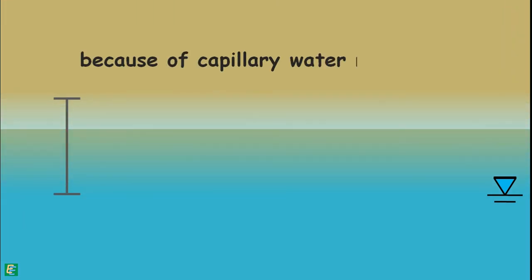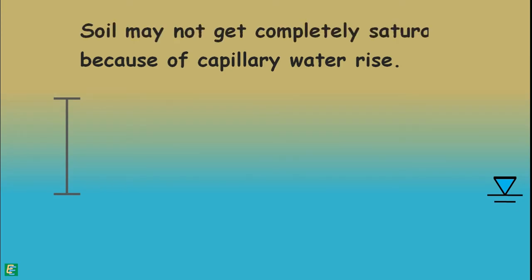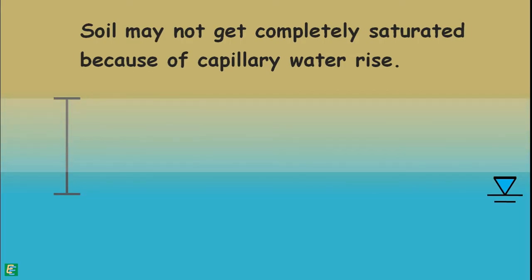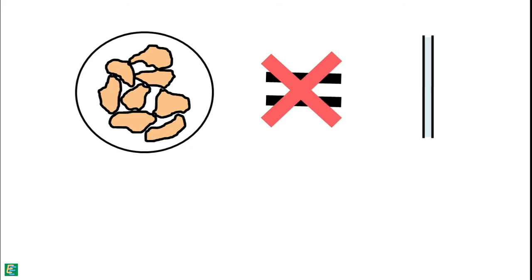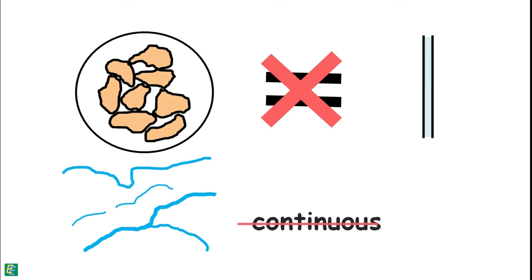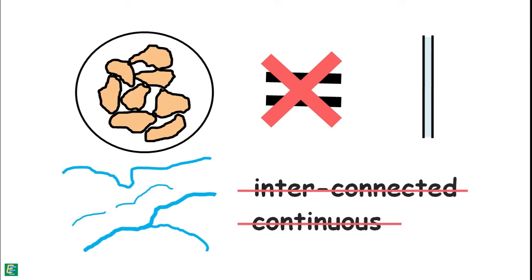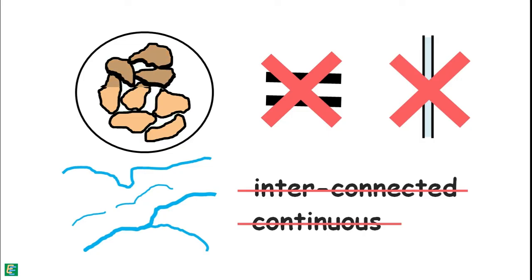We should also note that because of the rise of capillary water, soil does not necessarily get fully saturated. Even at small heights above the free water surface, the degree of saturation may be below 100% for many soils, and saturation is even lower at higher elevations. Voids are not like capillary tubes — they are irregular in shape and size, not necessarily continuous and interconnected, and may not even be vertical, because voids are created by the random assemblage of soil grains.